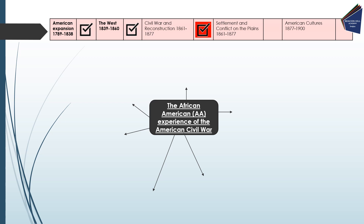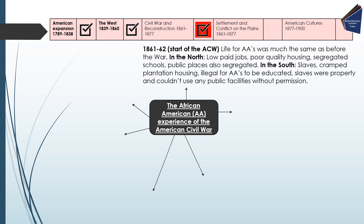Past paper questions have asked about the African-American experience of the Civil War — how black Americans felt, how they were treated, and what their experience was. At the start of the war, life for African-Americans was much the same as before. In the North, they continued to have low-paid jobs, poor quality housing, and segregated schools and public places. In the South, slaves were cramped in plantation housing, it was illegal for them to be educated, and they were seen as property, unable to use any public facilities without permission.